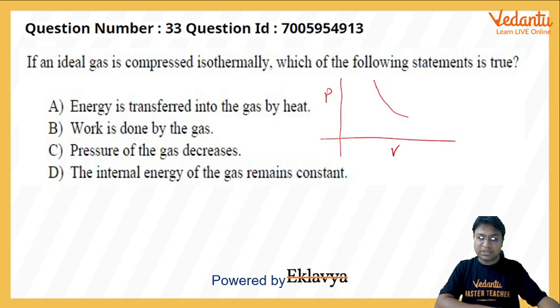If we are compressing a gas isothermally, we can expect a graph like this. The energy is transferred into the gas by heat. Now, in an isothermal process, the change in internal energy is zero, so Q will become equal to W. Since W is negative, Q will be negative, which means the gas has given out heat.